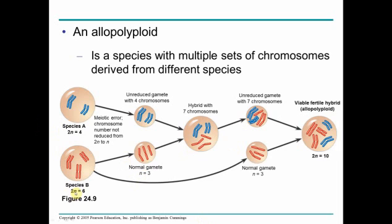Here's species A and species B — you see 2n equals 4 and 2n equals 6. They combine, and you see an awkward number; in the end, 2n equals 10.